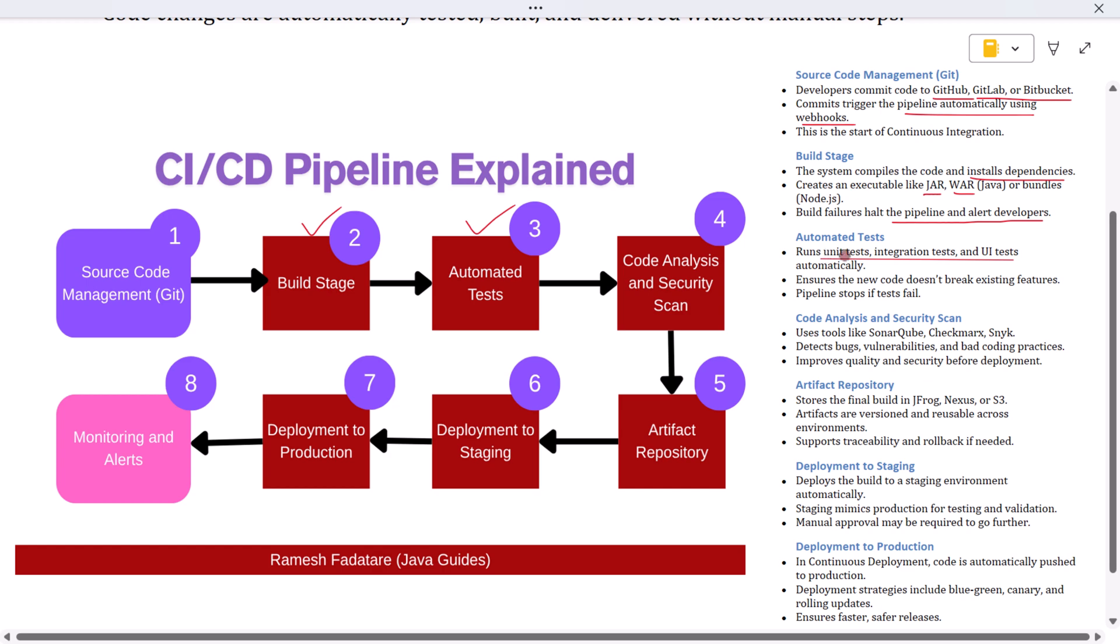This is where unit tests, integration tests, and sometimes even UI tests are run, all without any manual intervention. If the code passes all the tests, it means it's stable and doesn't break existing features. If any test fails, the pipeline again halts and the development team is notified to fix the issue before proceeding. This ensures quality and avoids pushing broken code further downstream.